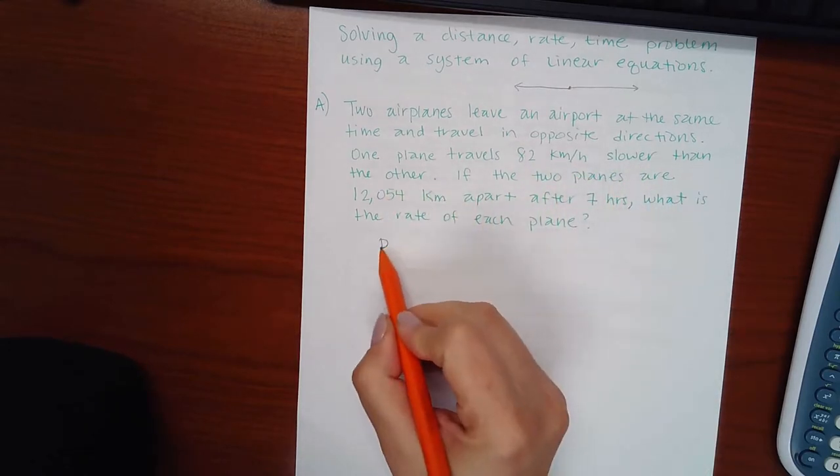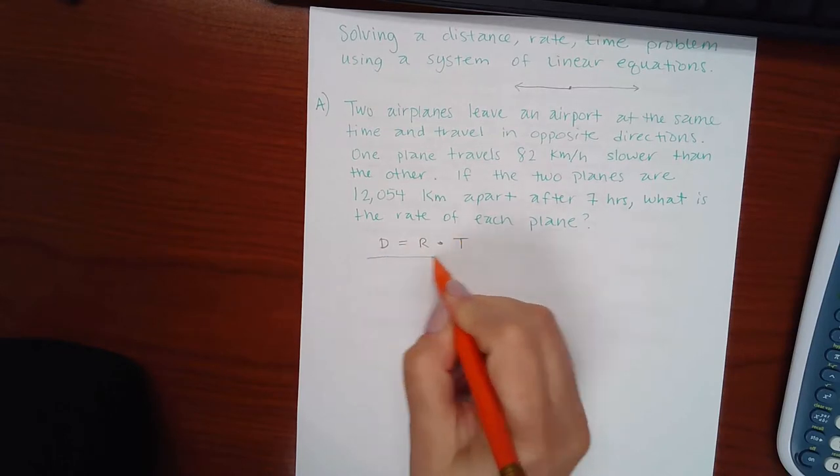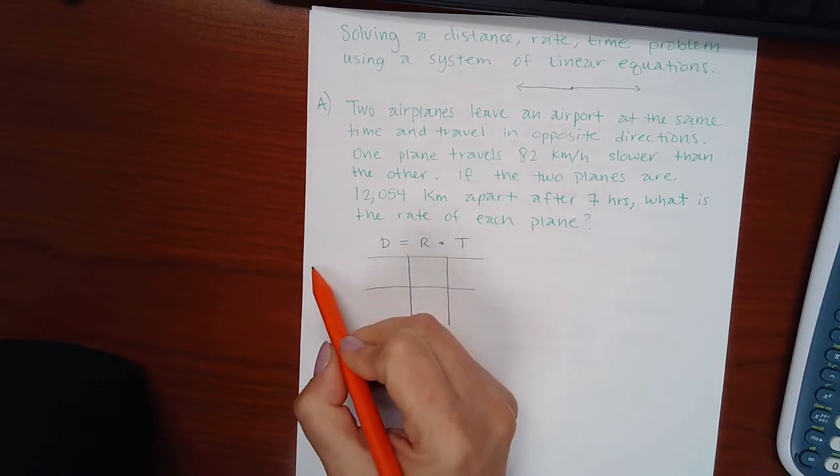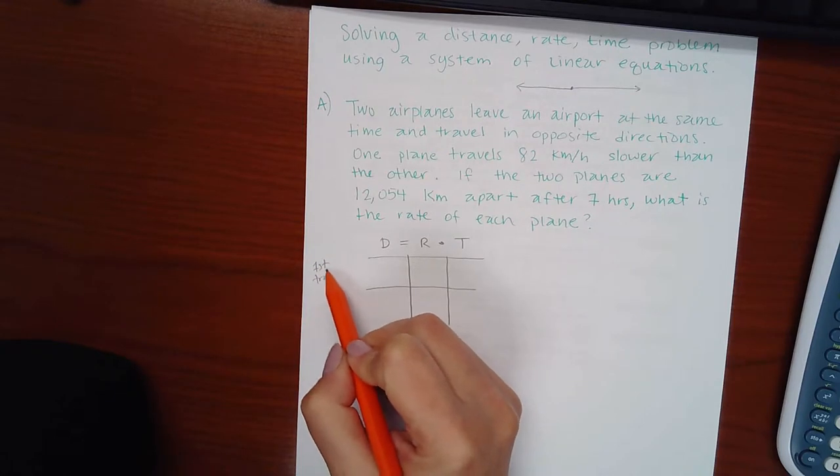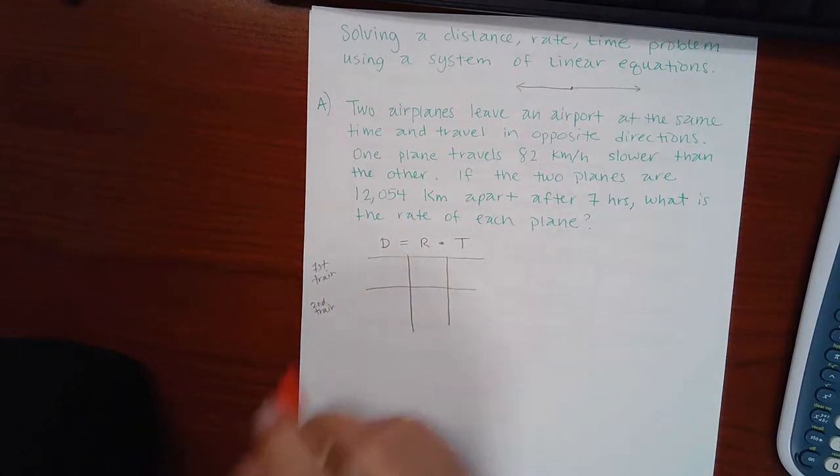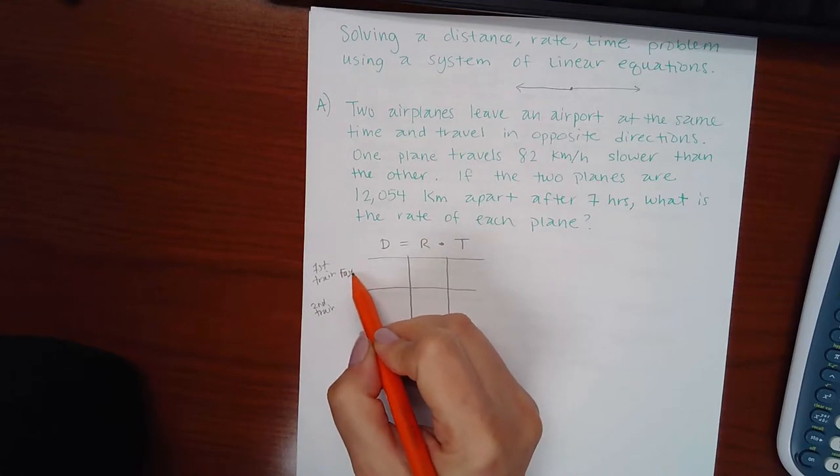It says one plane travels 82 kilometers per hour slower than the other train. So we know that distance equals rate times time. And I obviously have two different trains here, right? So I'm going to say the first train and the second train. And the only thing they're using to distinguish the two is that one is faster and one is slower. So I'll call this one the faster and this one the slower.